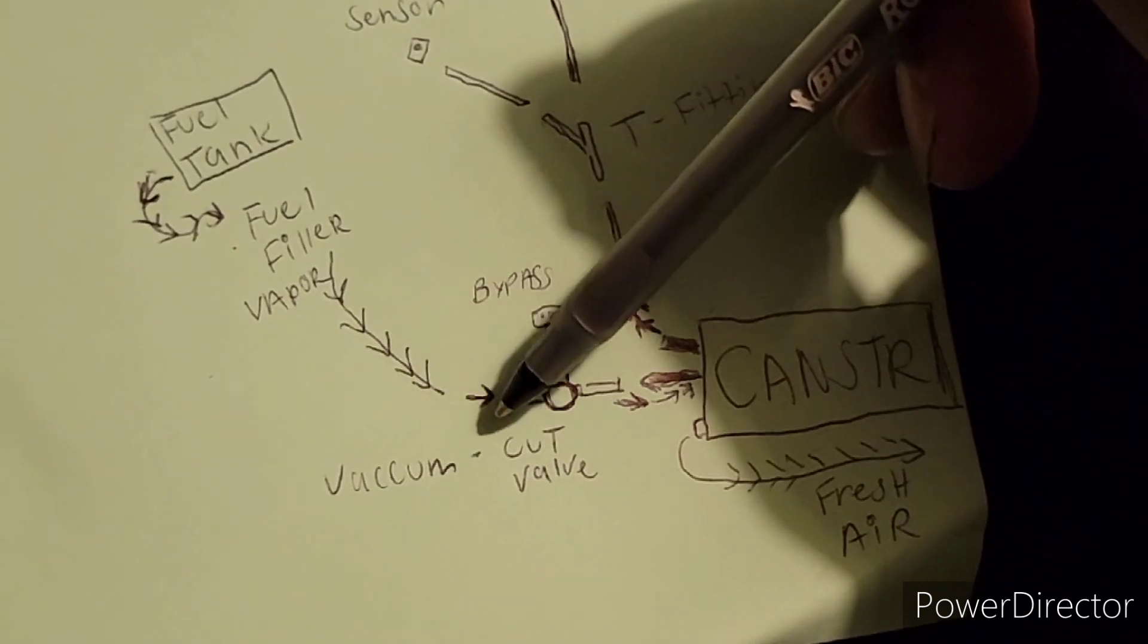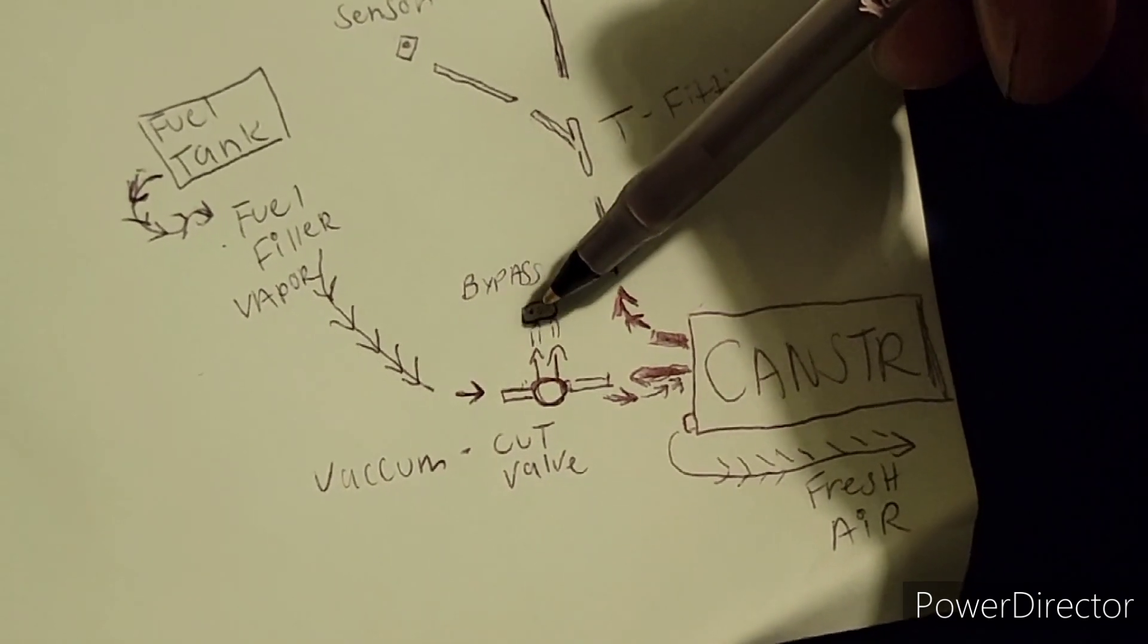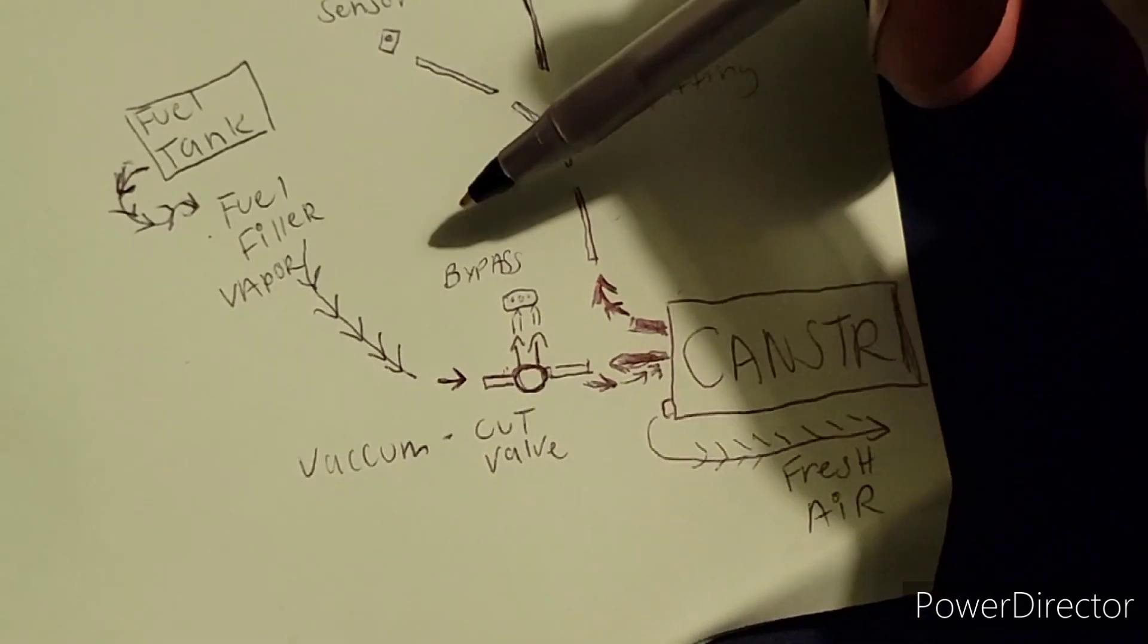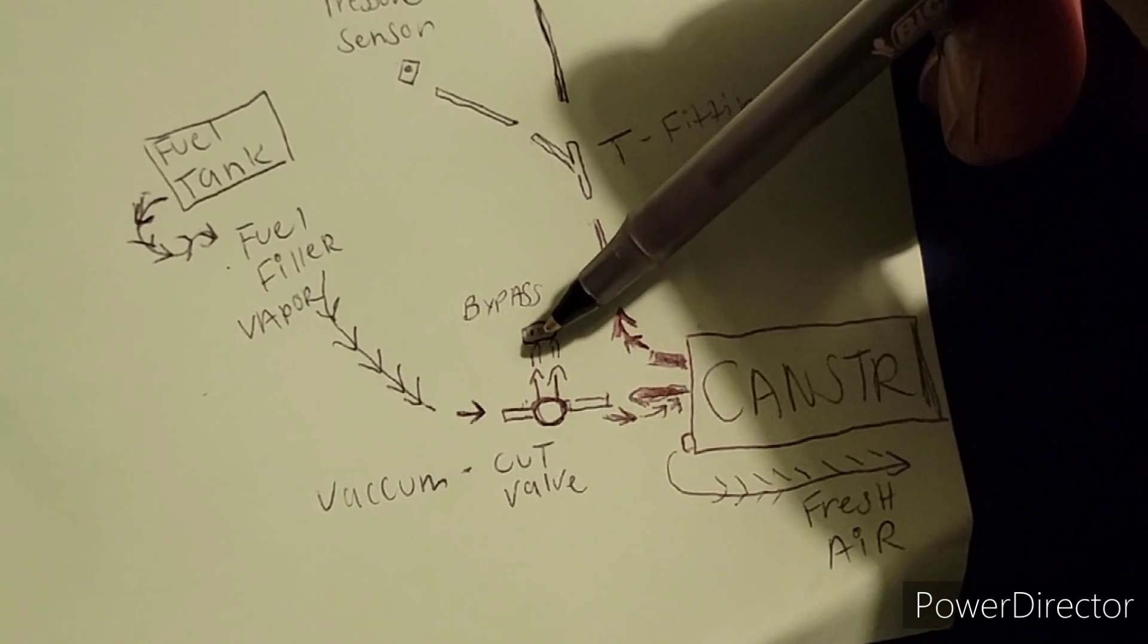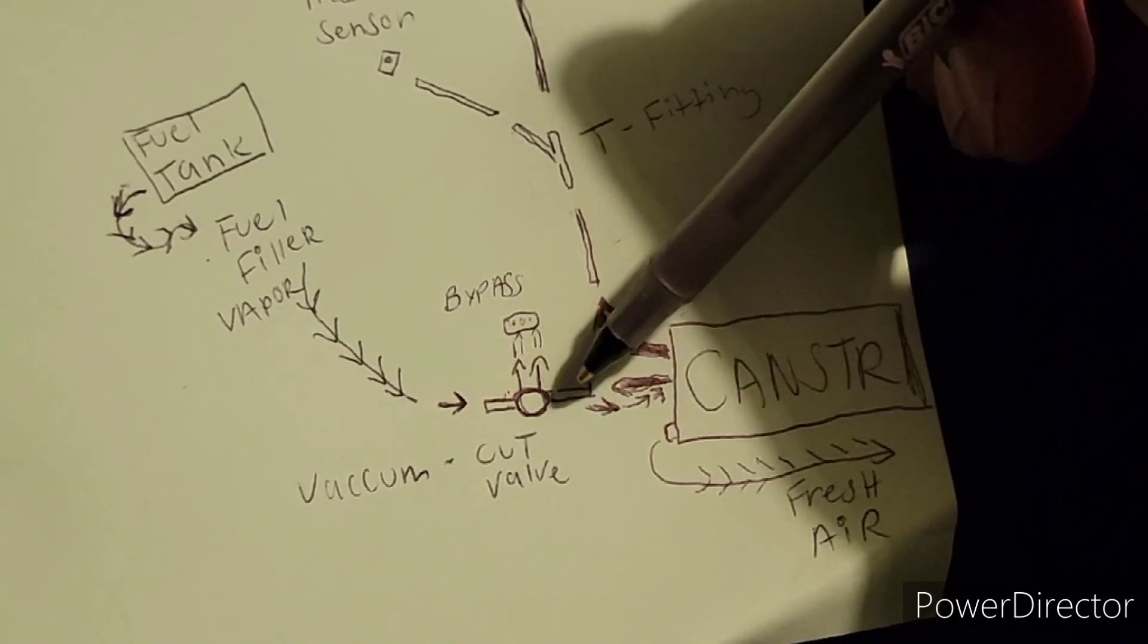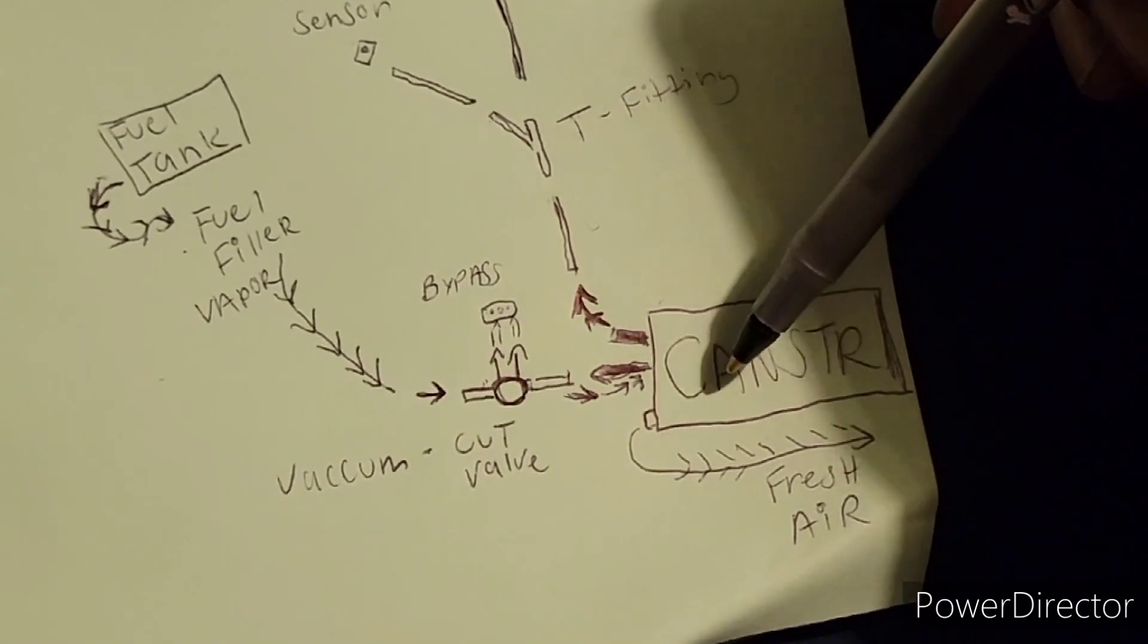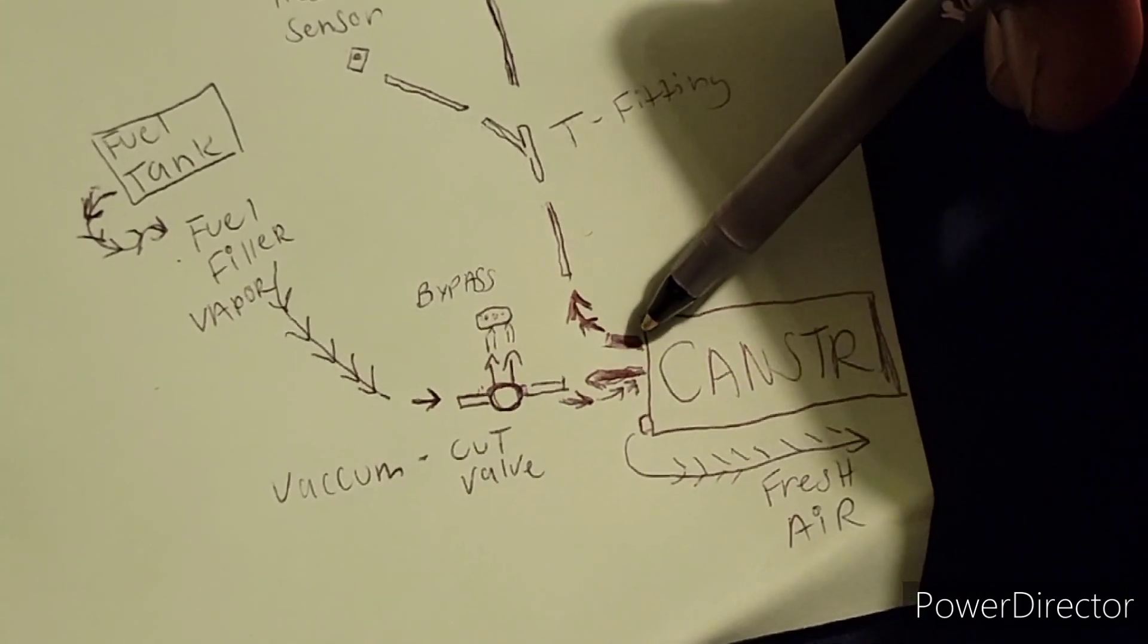Now this bypass solenoid right here, which I was calling a purge valve, it's like a green connector on it, right? So I guess it allows fuel vapor to pass through this cut valve, this white diaphragm, into the canister. And the air helps with pushing this fuel vapor, breaking it down over the charcoal.